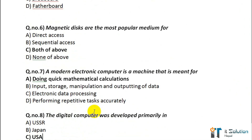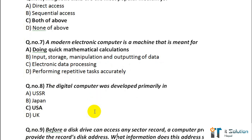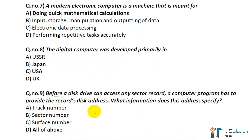Question number 7: A modern electronic computer is a machine meant for option A — doing quick mathematical calculations. Question number 8: The digital computer was developed primarily in option C — USA. Question number 9: Before a disk drive can access any sector record, a computer program must provide the record's disk address. What information does this address specify? Its correct answer is all of the above.